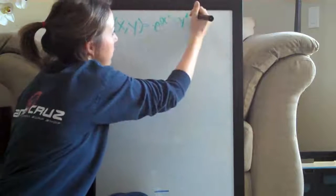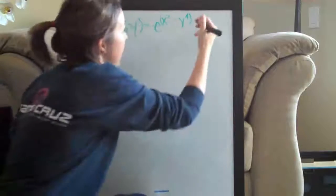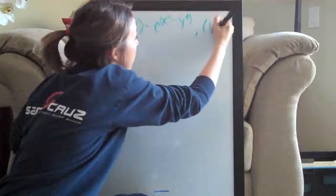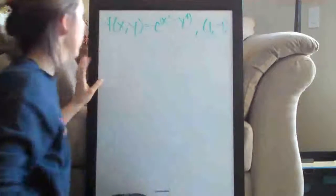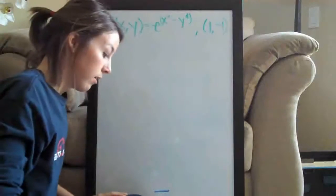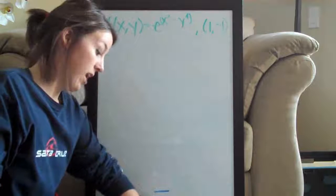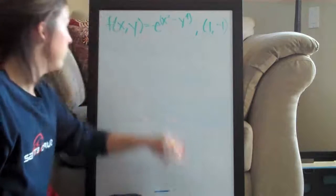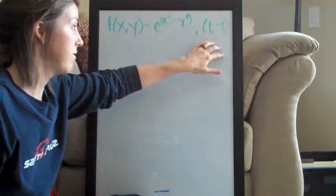This whole thing here is part of the exponent. At the point (1, negative 1). The instructions for this problem are to find the equation of the tangent plane to the graph of this function at this point.